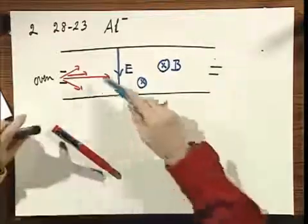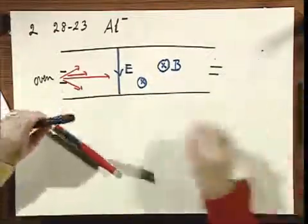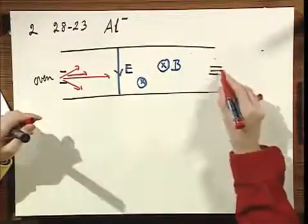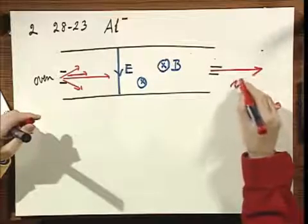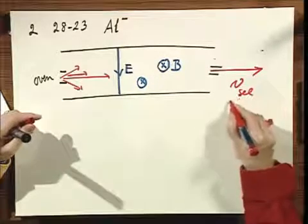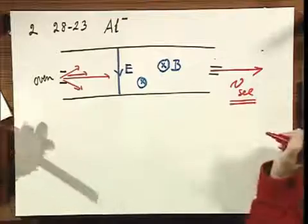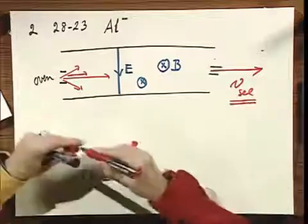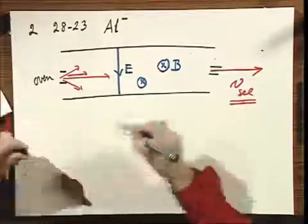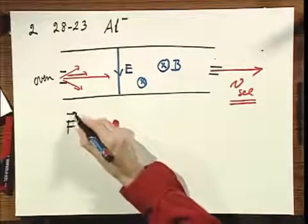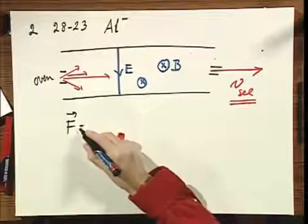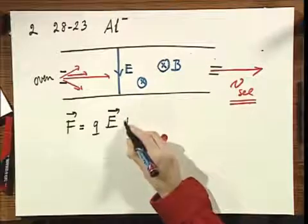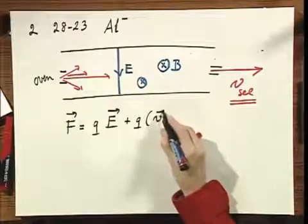Now there is a remarkable consequence of this setup: by adjusting E and B, I can select aluminum ions which have a specific speed — I call it V selected. And how does that work? The force on these ions equals Q times E plus Q times V cross B.